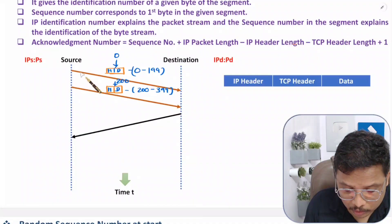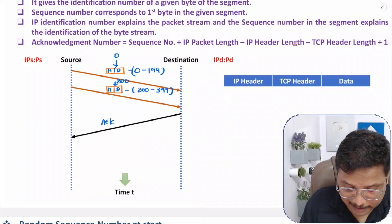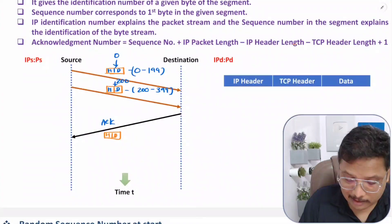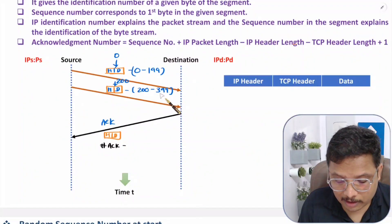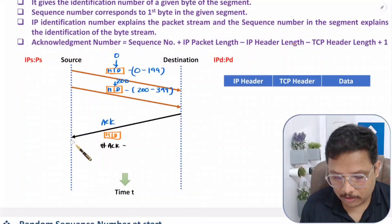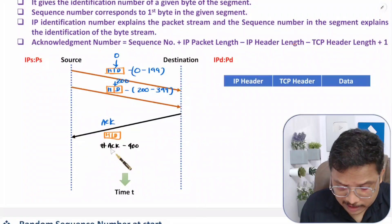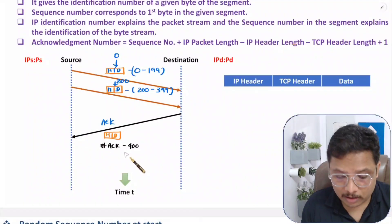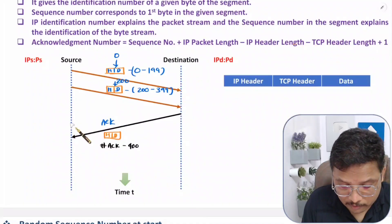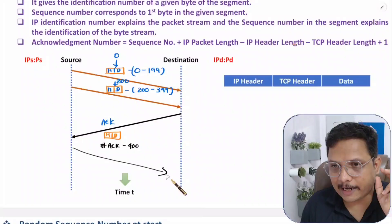Now both segments have been received by the destination. The destination gives acknowledgement. In that acknowledgement there is a header and data. The destination has received bytes 0 to 399, so it will ask for byte 400. The acknowledgement number will be 400. Acknowledgement number gives the source the information about what byte number it should forward in the next segment — what should be the location of the next data byte.